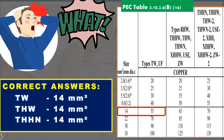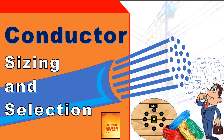How come? Our topic on this video is about conductor sizing and selection. Wire or cable selection is about choosing the correct size and type of conductors to ensure that the system is working properly and reliably for the safety of everyone and the property.